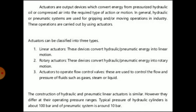What do we mean by actuators? Actuators are output devices which convert energy from pressurized hydraulic oil or compressed air into the required type of action or motion. In general, hydraulic and pneumatic systems are used for gripping and moving operations in industry, and these operations are carried out by using actuators. Actuators can be classified into three types. First, linear actuators — these devices convert hydraulic or pneumatic energy into linear motion.